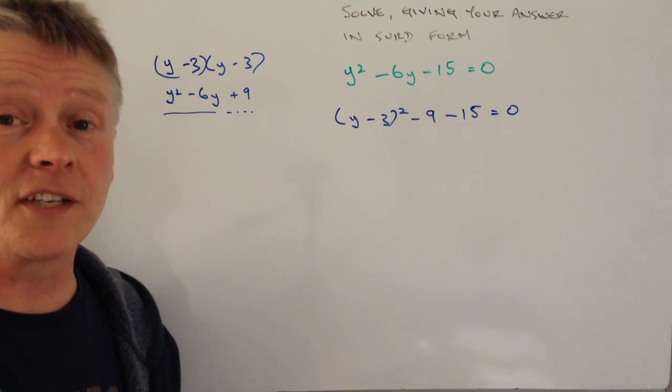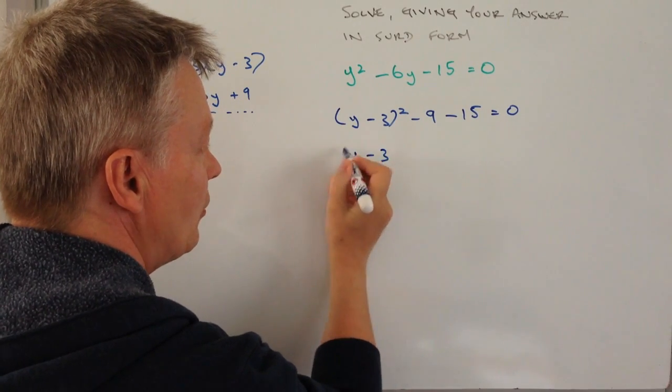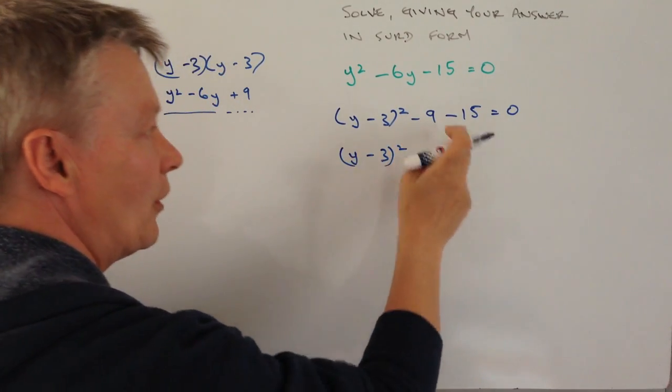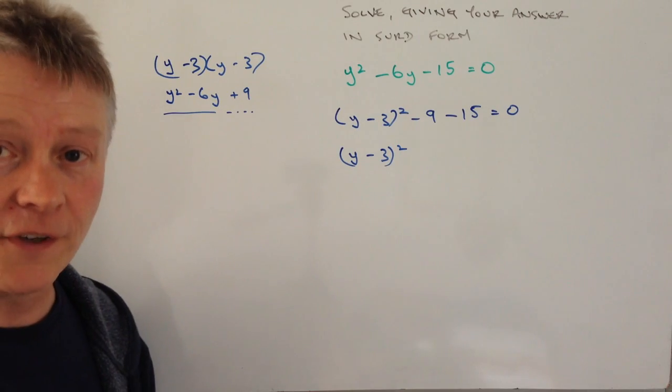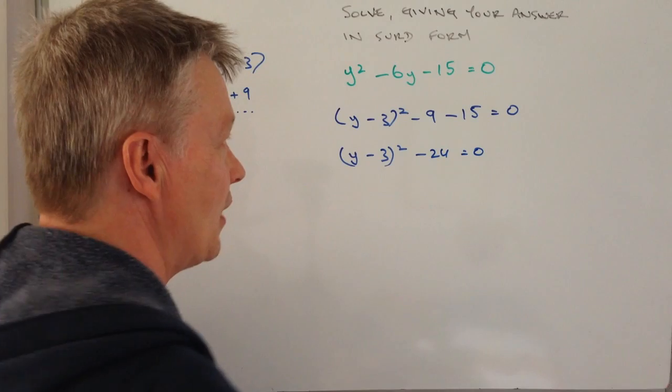And then really it's just a case of tidying this up. So let's just add those two, or bring those two negatives together. I've got minus 9, minus 15 is going to be minus 24. And that's equal to 0.